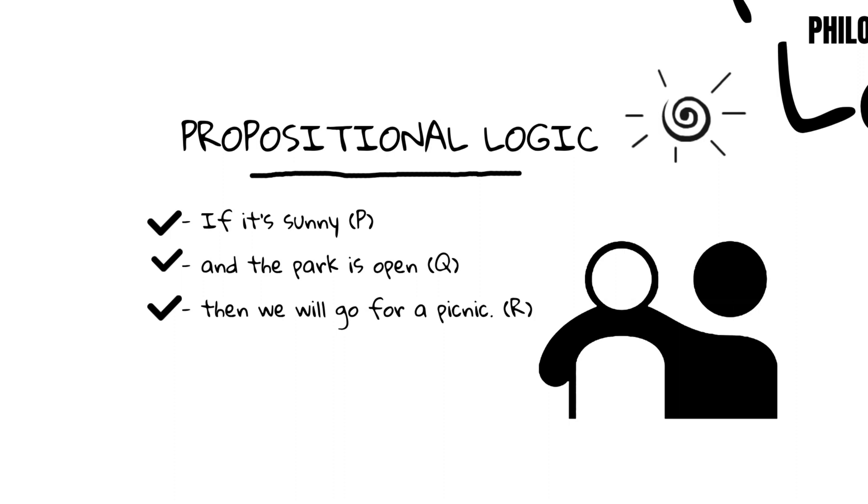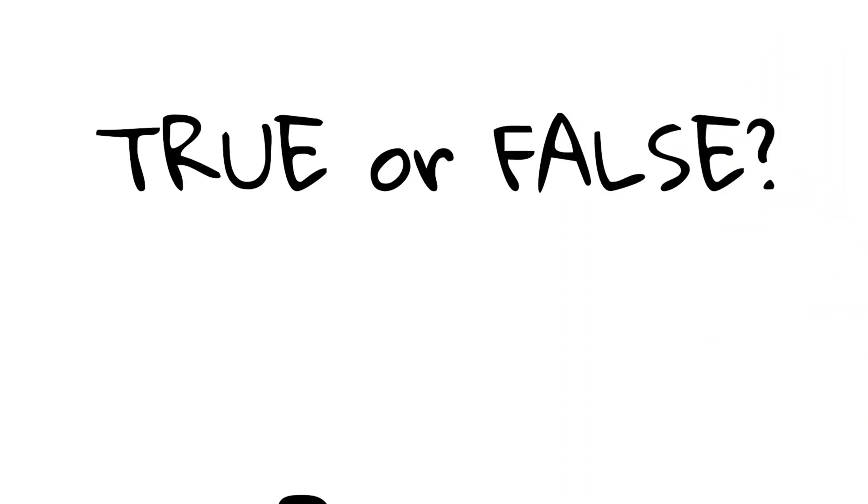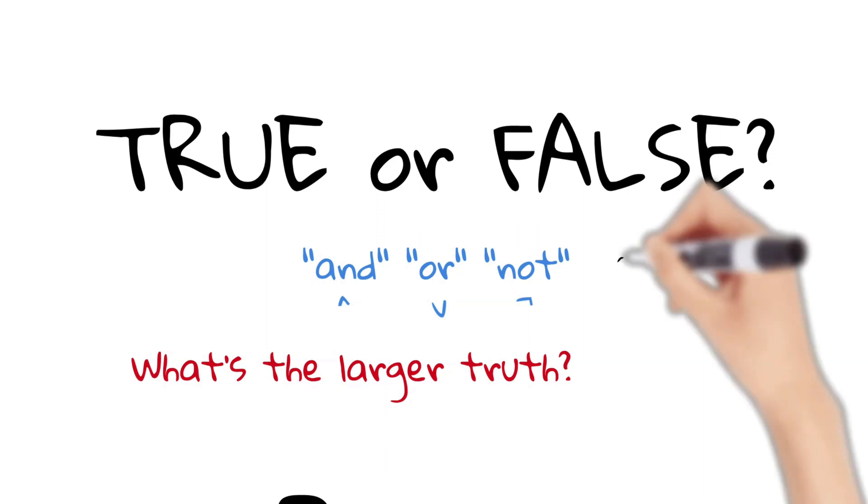Also, you can negate these propositions. Let's say it turns out it's not sunny. In the language of propositional logic, we'd express this as not P. Propositional logic is all about dealing with such true or false statements, or propositions, combining them using logical connectors like and, or, and not, and understanding what the larger truth is when these smaller truths are put together. This kind of reasoning is critical in computer science, philosophy, law, and many other fields.